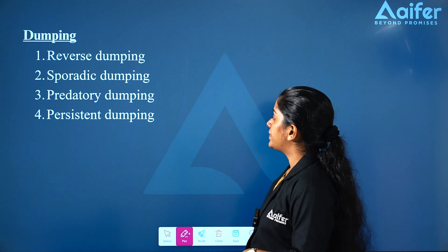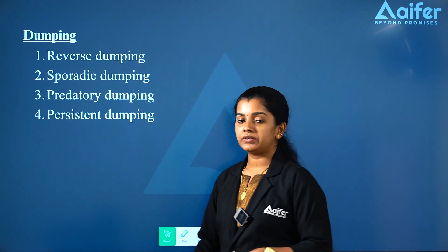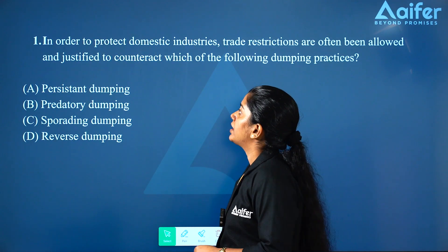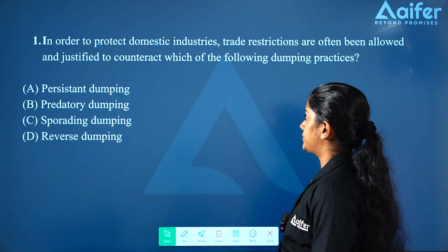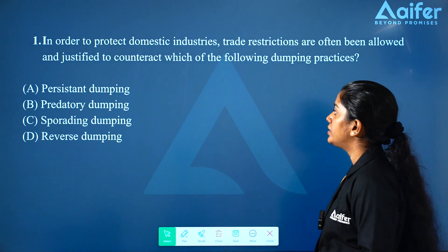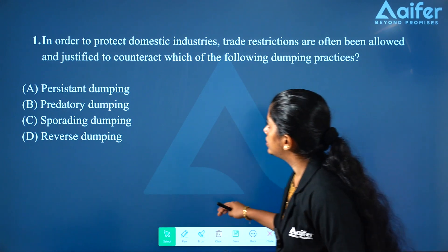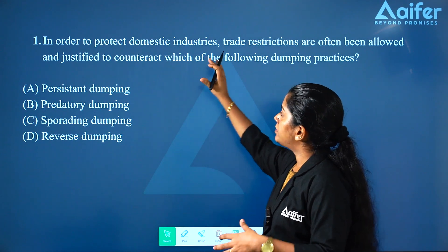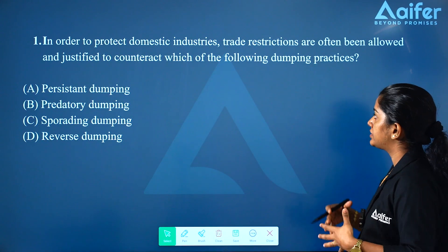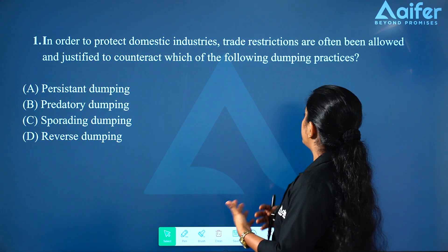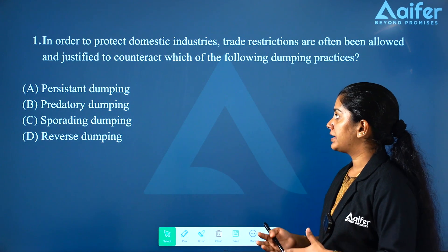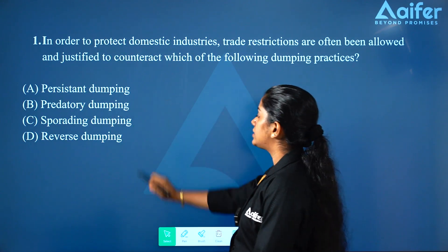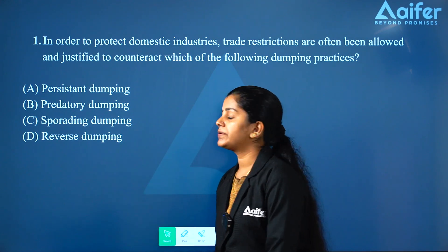Now we have questions from previous years. In order to protect domestic industries, trade restrictions are often being allowed and justified to counteract which of the following dumping practices? We have to protect domestic industries and justify trade restrictions. The options are: persistent dumping, predatory dumping, sporadic dumping, and reverse dumping — four types of dumping.